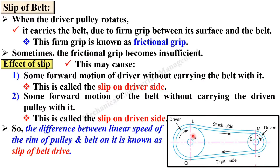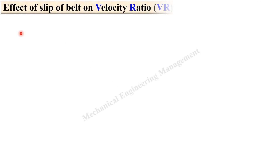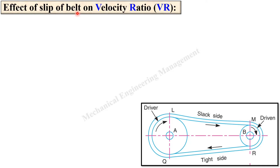The slip is actually the difference between the linear speed of the rim of the pulley and the belt on it. It is expressed in percentage generally. Next topic: effect of slip of belt on velocity ratio.